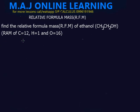In this video, you're learning how to calculate relative formula mass in chemistry. Let's find the relative formula mass of ethanol, which is CH3CH2OH. We have our relative atomic masses: carbon is equal to 12, hydrogen is equal to 1, and oxygen is equal to 16.